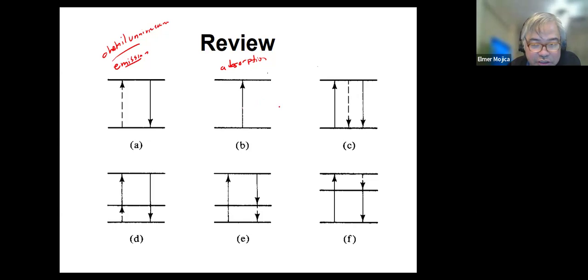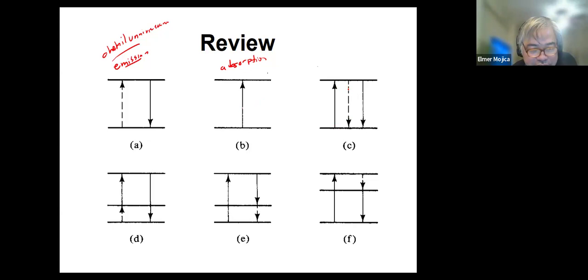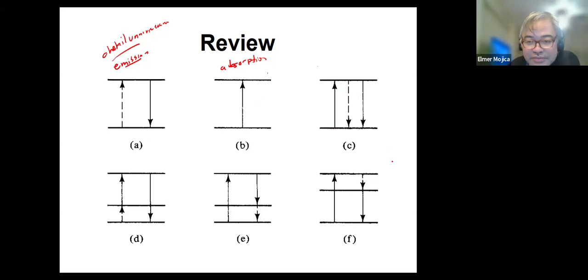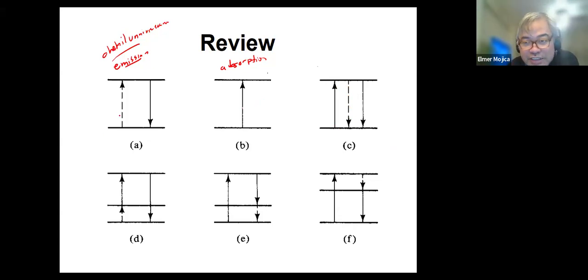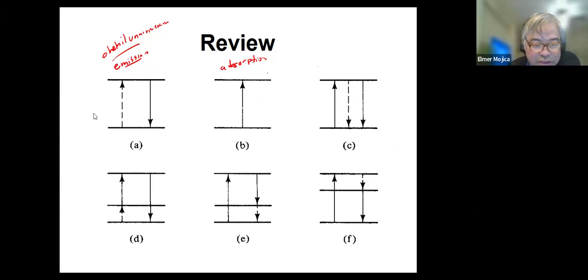In letter C, what do you see here? There is an absorption — and what follows? There's a dash line. The dash line goes up and the straight line goes down. How are we going to differentiate letter C from letter A?